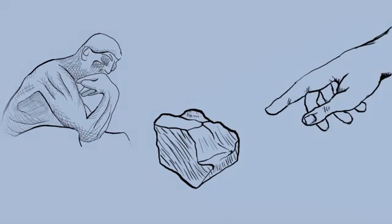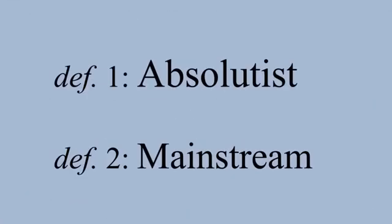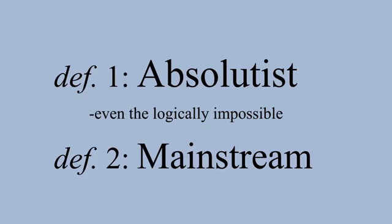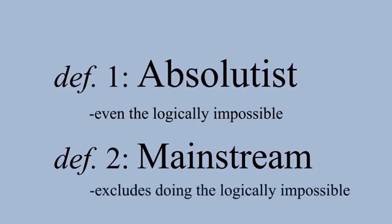Broadly speaking, we can define omnipotence in two ways. The absolutist view holds that omnipotence includes doing absolutely anything, even the logically impossible like creating a perfect circle that is also perfectly square. Western philosophical and theological traditions have almost universally rejected this view and have excluded doing the logically impossible from omnipotence.